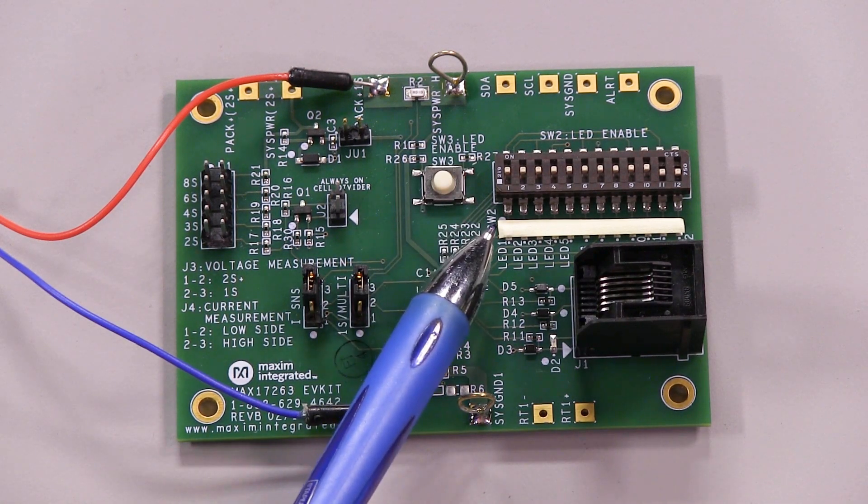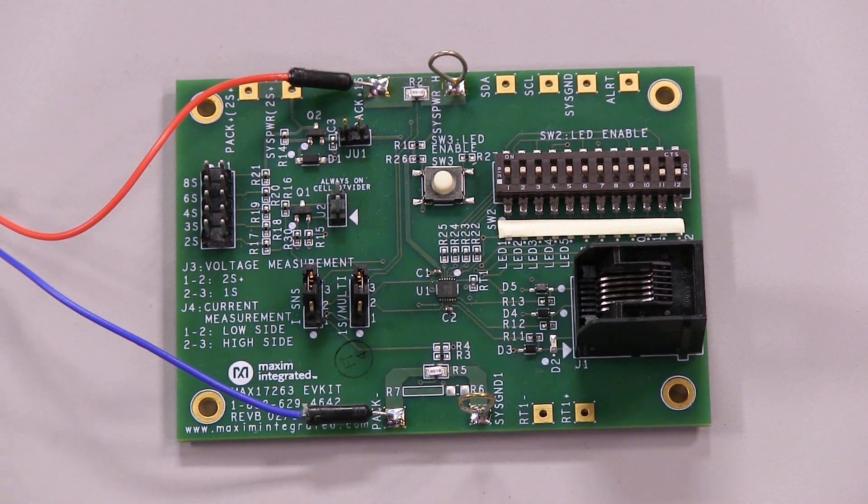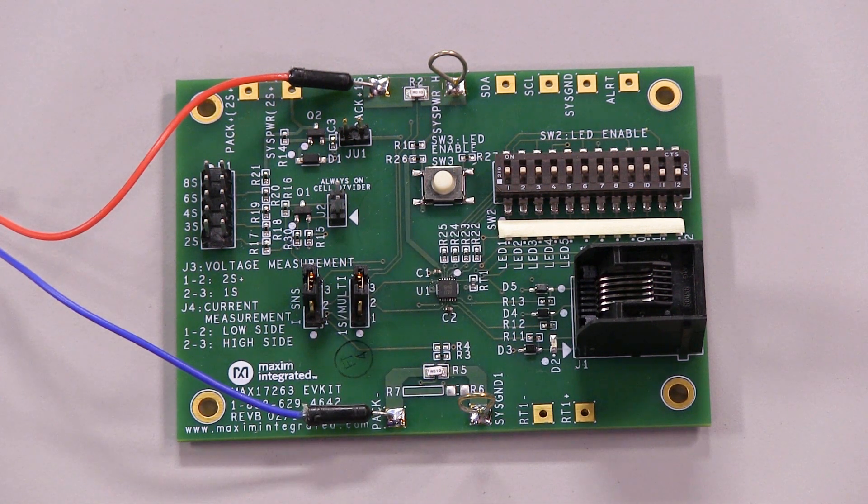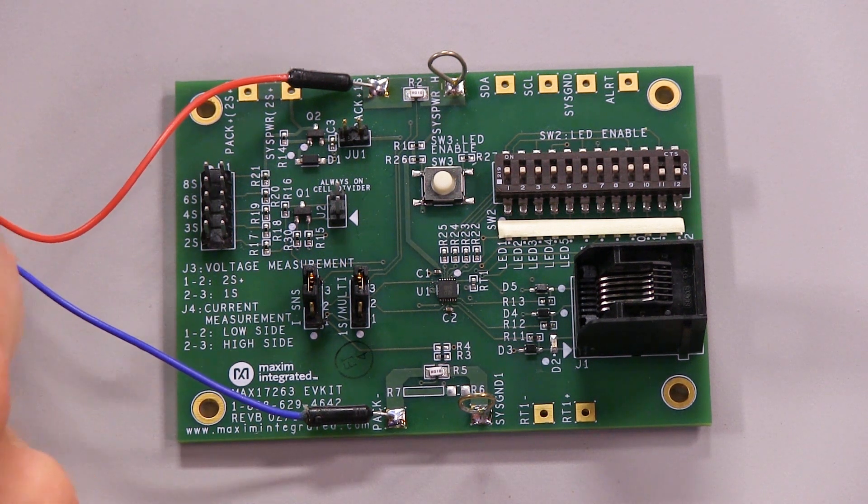I stuck a strip of paper over the LEDs so that it's easier for the camera to pick up. Watch carefully as I connect the battery, and you'll see the LEDs flash briefly during the automatic detection cycle. And there it was.